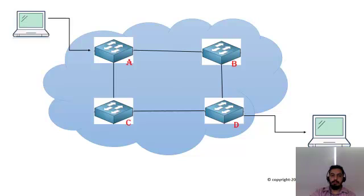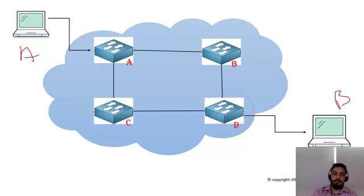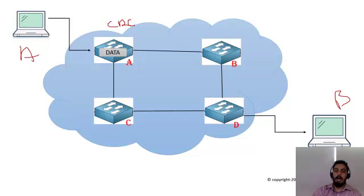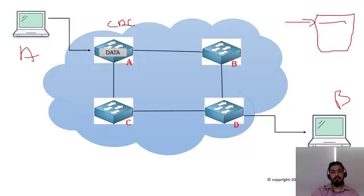In the store-and-forward scenario, we have different switches, Host A, and Host B. Host A sends data to Host B. The data is received by Switch A, which checks it using CRC to confirm it is error-free. Once confirmed, Switch A asks Switch B if it is available to receive the data.